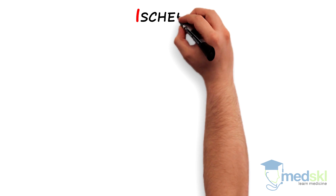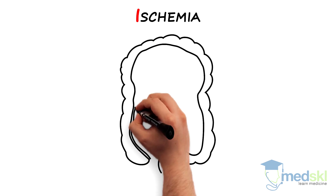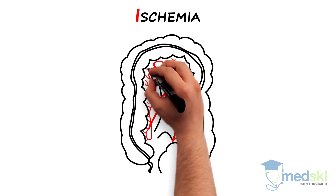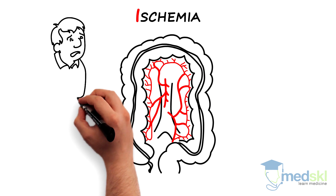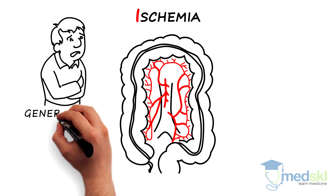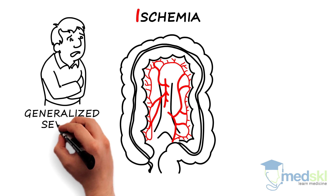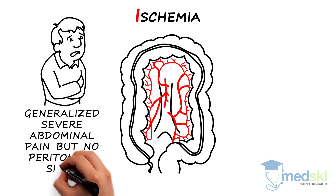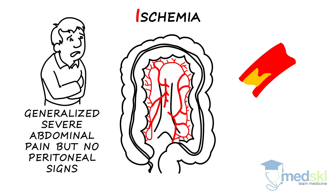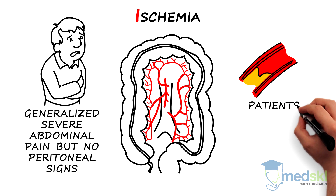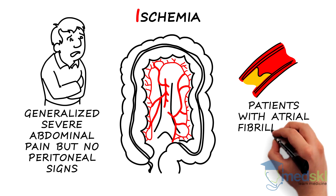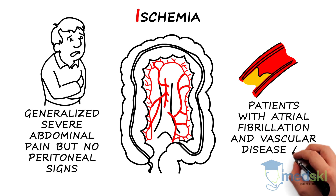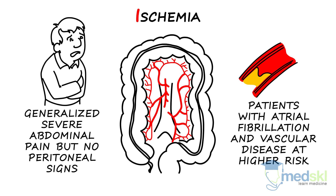I is for ischemia. Patients with mesenteric artery thromboembolism or ischemic gut have a sudden onset of generalized severe abdominal pain, but an absence of impressive peritoneal findings on exam. Patients with atrial fibrillation who are not anticoagulated and patients with known vascular disease are at higher risk of this illness.